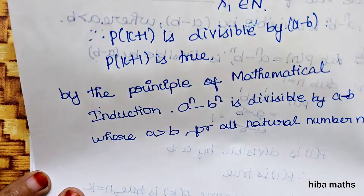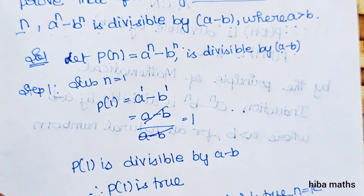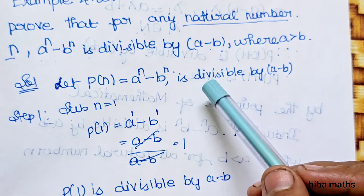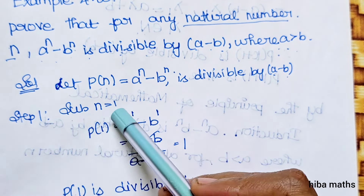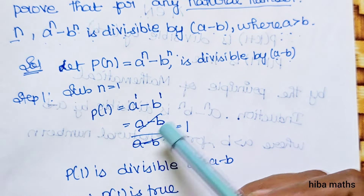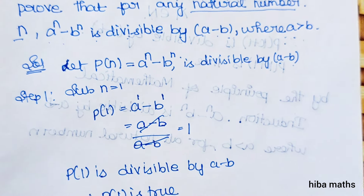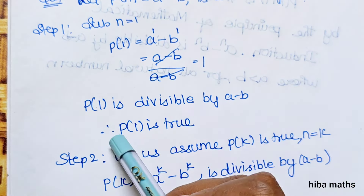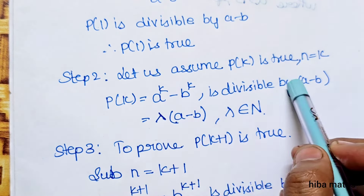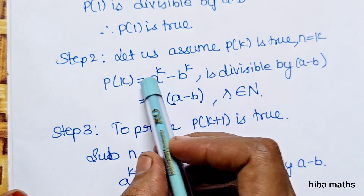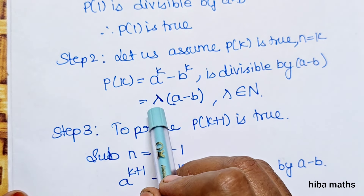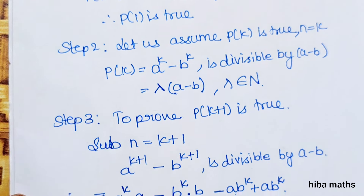Let me revise this once more. First, P(n) is defined as the condition that a^n minus b^n is divisible by (a minus b). In Step 1, substituting n equal to 1 gives a minus b, which is divisible by (a minus b), so P(1) is true. In Step 2, we assume P(k) is divisible by (a minus b), meaning there exists a quotient lambda which is a natural number.